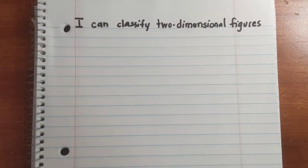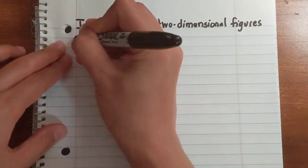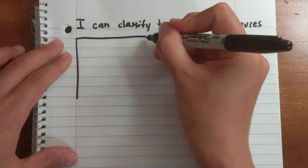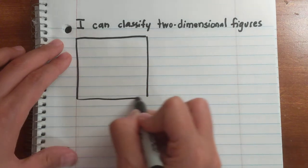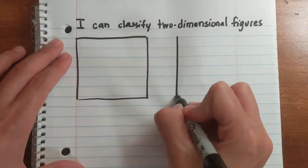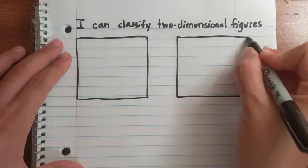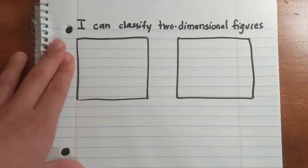All right, the learning objective for today is: I can classify two-dimensional figures. We're going to jump right into an analogy. Phones are pretty popular — not everybody has one; I didn't get a cell phone until I was 16, so it's okay if you don't have a phone.